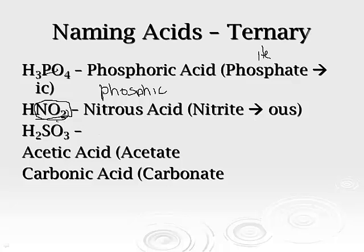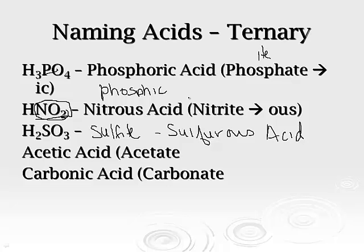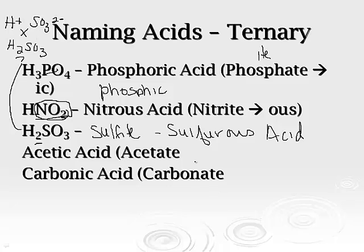If you look at H2SO3: SO3 is sulfite. If it's an -ite ending, we make it -ous, so this is sulfurous acid. The sulfates and sulfites are the ones where we have to add that in. The reason the 2 is there for hydrogen: sulfite is a 2- charge and hydrogen is a 1+ charge, so when you crisscross them, it has to be H2SO3.